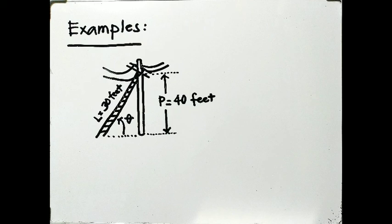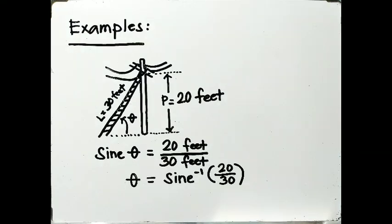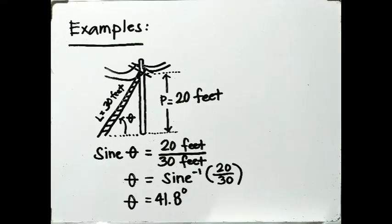For the example on solving angles using trigonometric ratios: a ladder 30 feet in length was leaned on an electrical post so that a lineman can do his electrical task. Find the angle of ladder inclination needed at 20 feet high from the bottom of the electrical post. The equation is: sine θ = 20 feet / 30 feet. Therefore, θ = inverse sine of (20/30), which equals 41.8 degrees.